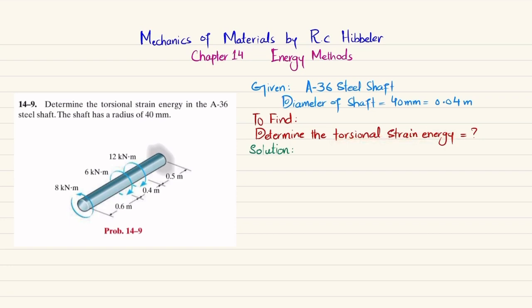The strain energy due to torsion is equal to the sum of T squared times L divided by 2GJ, where T is torque, L is length, G is the modulus of rigidity, and J is the polar moment of inertia. We will find the torque in each section.